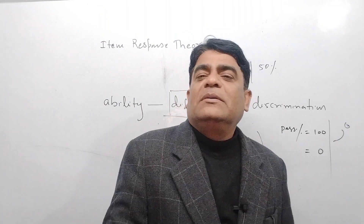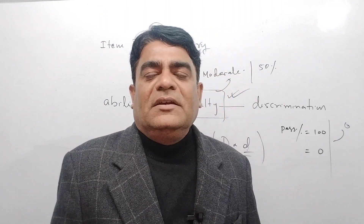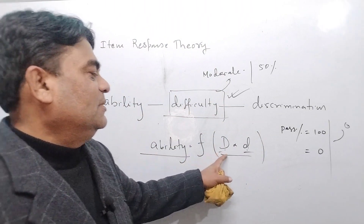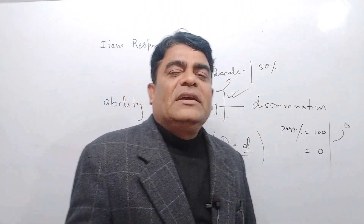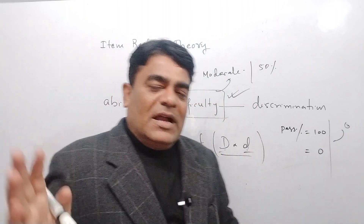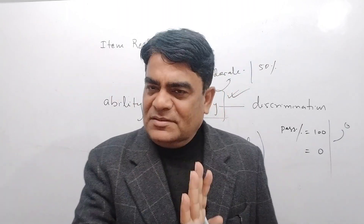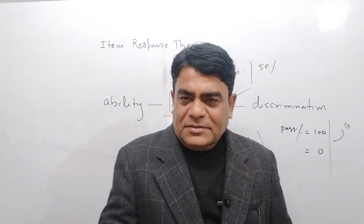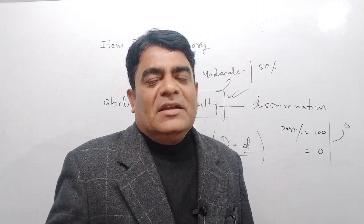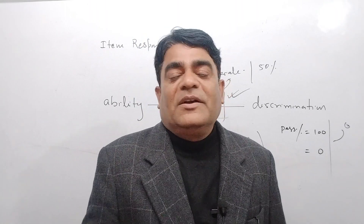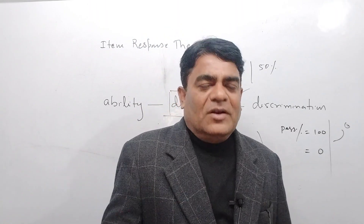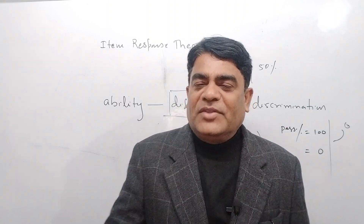Item response theory is an important concept. Mathematically, ability is a function of discrimination and difficulty — these are the key parameters. I hope you have understood this concept. If you have any doubts, you can write in the comment box. Thank you.